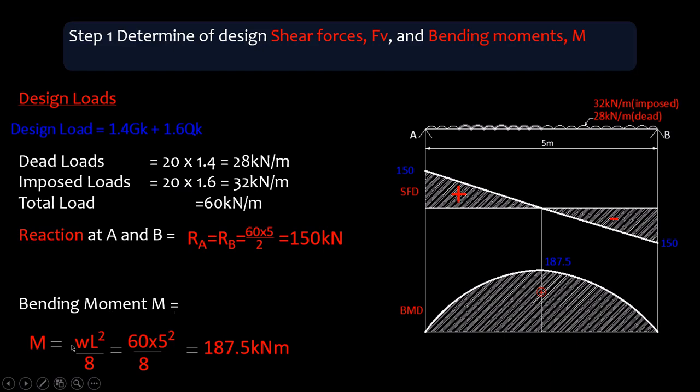So the design moment M, you basically use this formula WL²/8, and our W is 60, and our L is 5 meters. So 60×5²/8, you get 187.5 kN·m. The diagram shows if you sketch the shear force diagram, at A, the shear force at A is equal to the reaction at A, and of course the shear force at B is equal to the reaction at B. The maximum bending moment is 187.5. So we use these values now, the maximum shear and the maximum bending for designing.